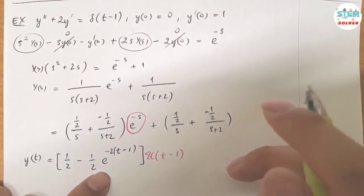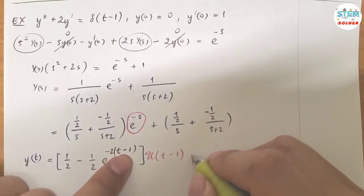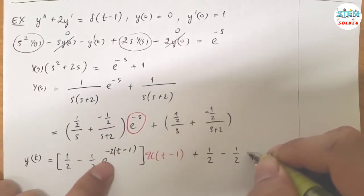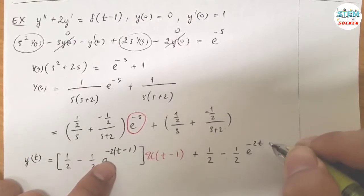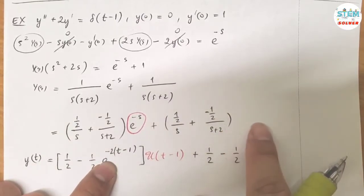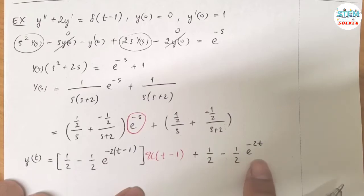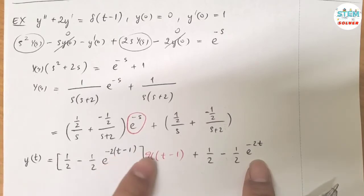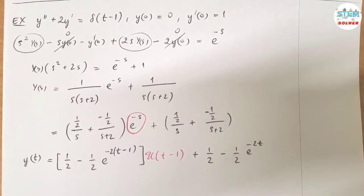That's it for this one. Now for this one, same thing except for this one. So you have 1 half minus 1 half e to the negative 2t. Because there's no unit step function here, so this is what you need to have. And for this one, you have the unit step function. So whenever you see t, it has to be t minus 1.